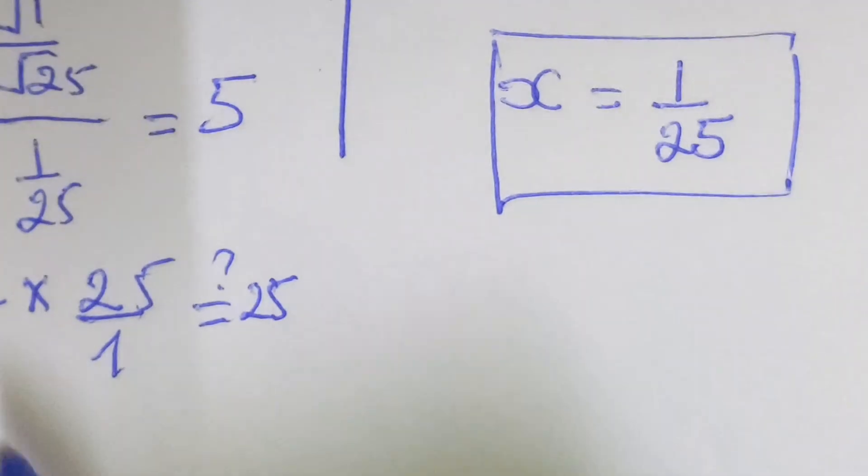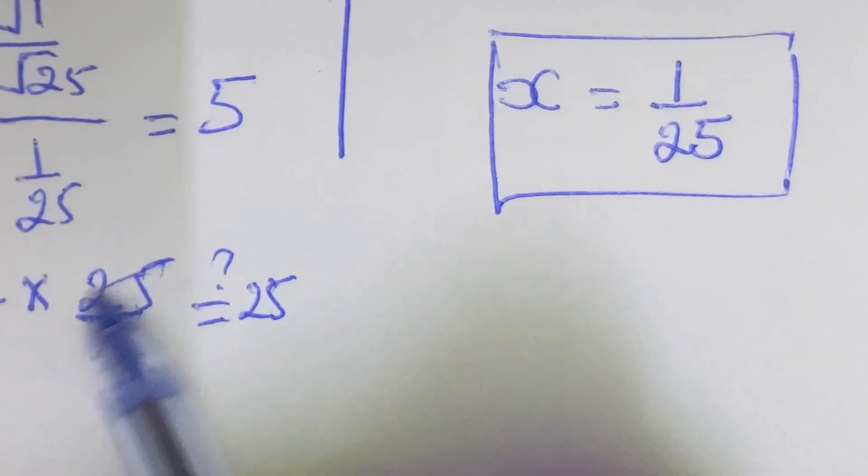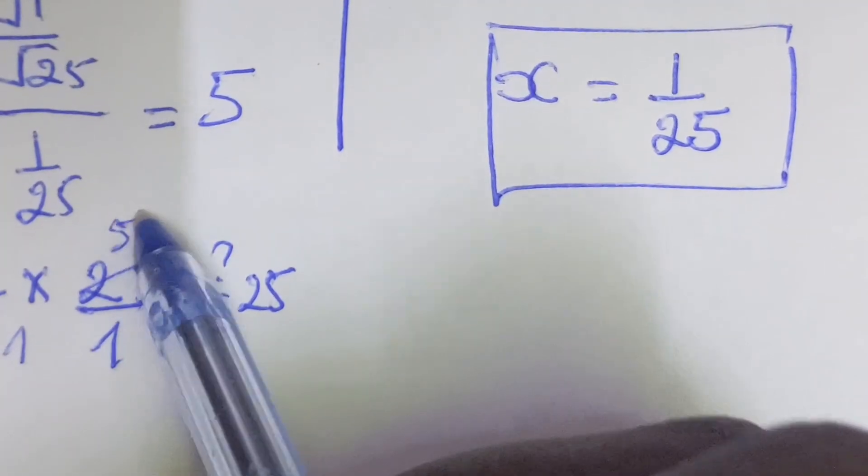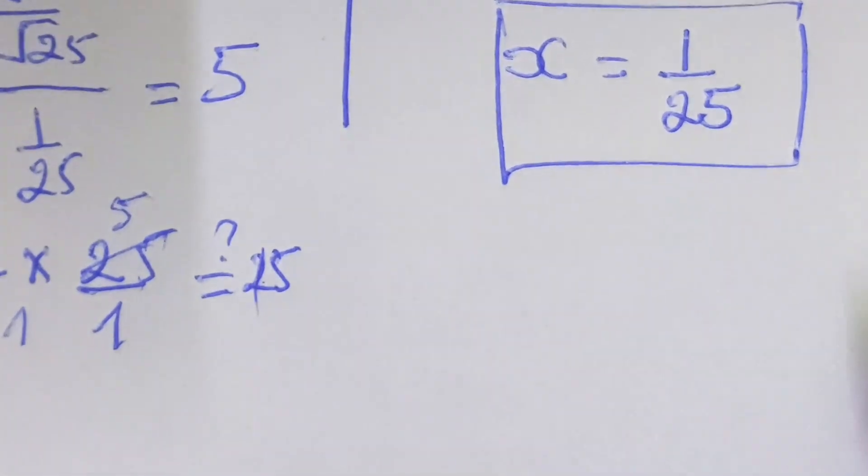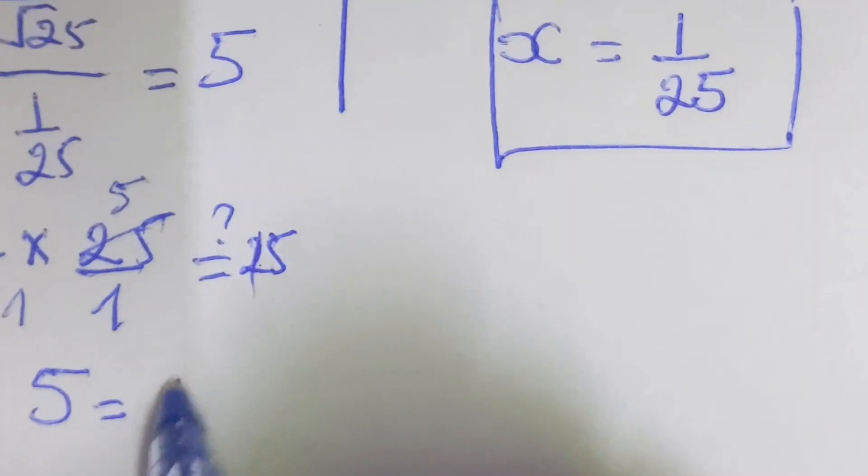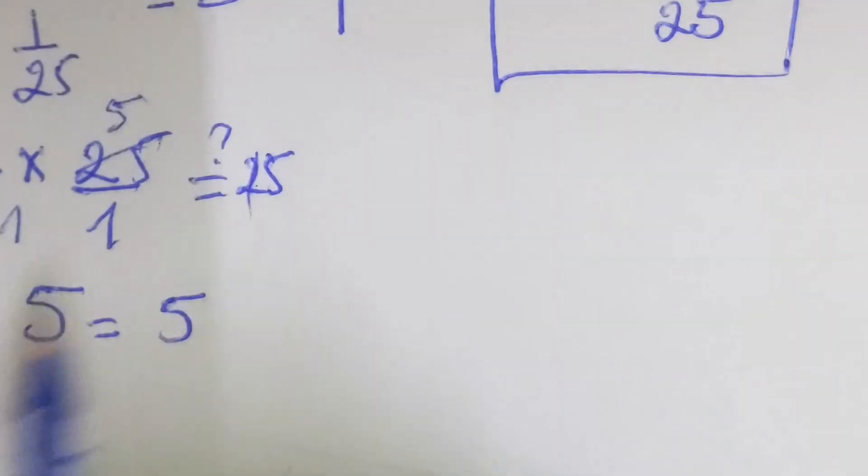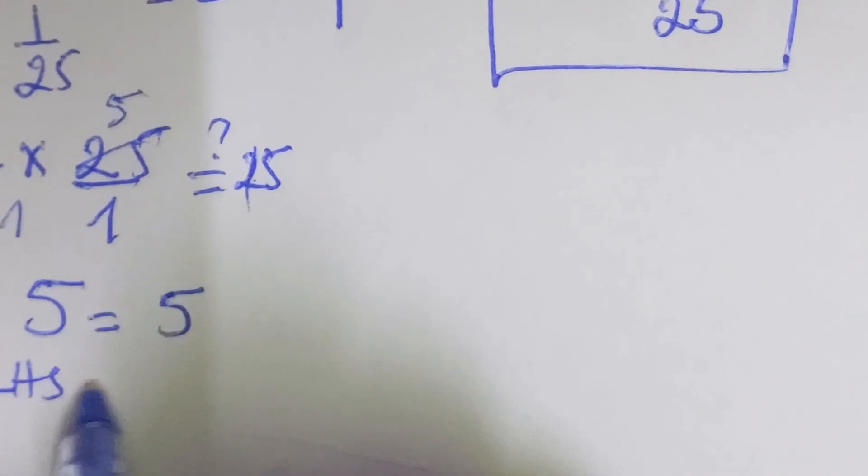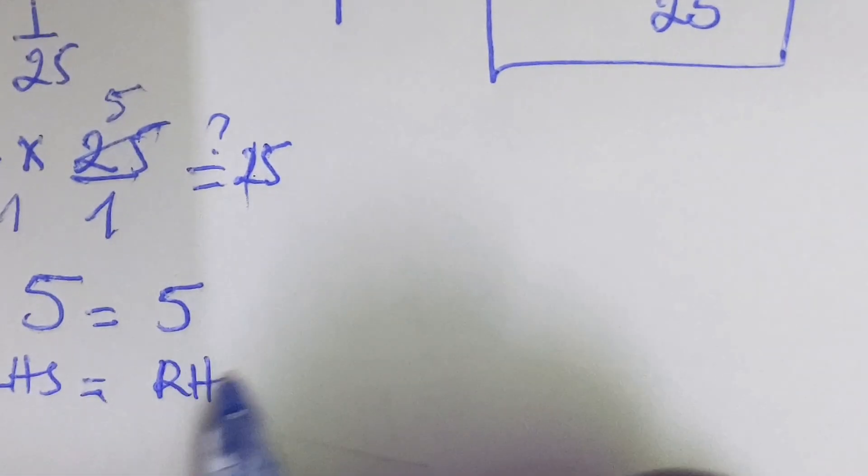This is equal to 25. By simplify, we shall get 1 right here and 5. So that right here we shall say 5 equal to 5. Then left hand side equals to right hand side.